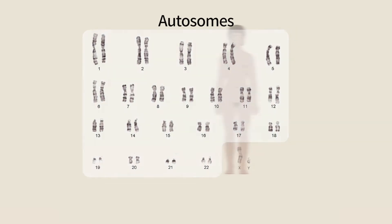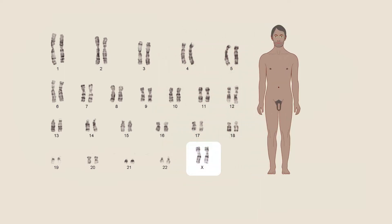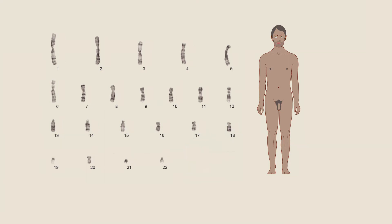In humans, for example, the female has, in addition to the two sets of 22 autosomes, two X chromosomes. Males, in contrast, have in addition to the autosomes one X and one Y chromosome. When sperm cells are formed, each of the four products of meiosis gets one set of autosomes, and in addition it gets an X or a Y chromosome.